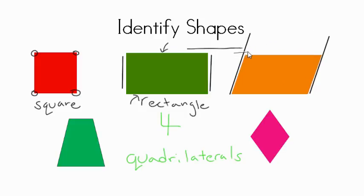Same with this right here. This line run on and on. It will also never meet this line. These are called parallel lines.